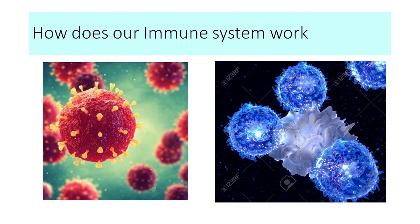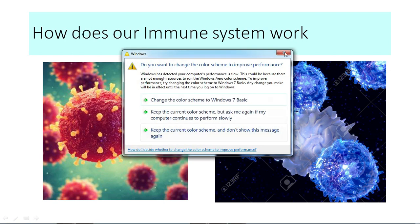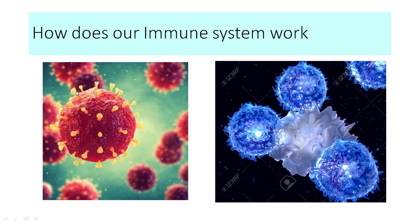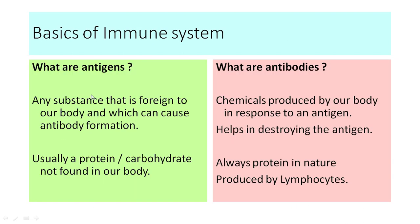Now, how does our immune system work? Anything which is a part of our body is considered as self; anything which does not belong to our body is considered as foreign — a danger to the body — and our immune system will go all out destroying it. This is a classical example of how a virus or bacteria looks. If you look closely at the surface you'll find small projections; these are proteins that are foreign to the human system, and so they are antigens.